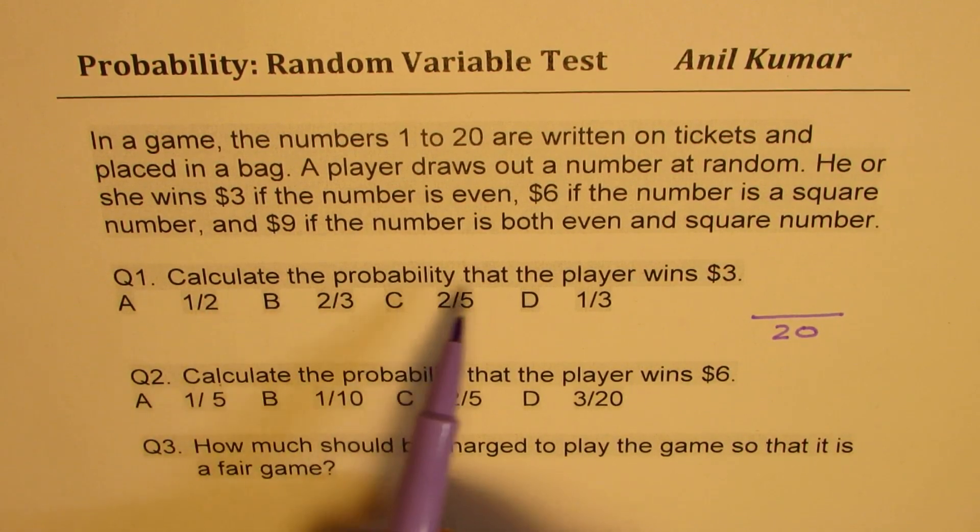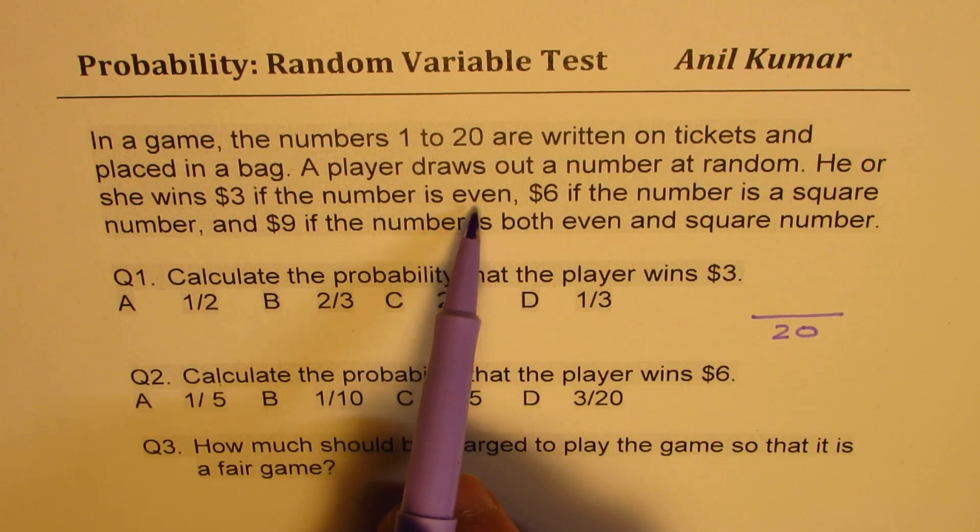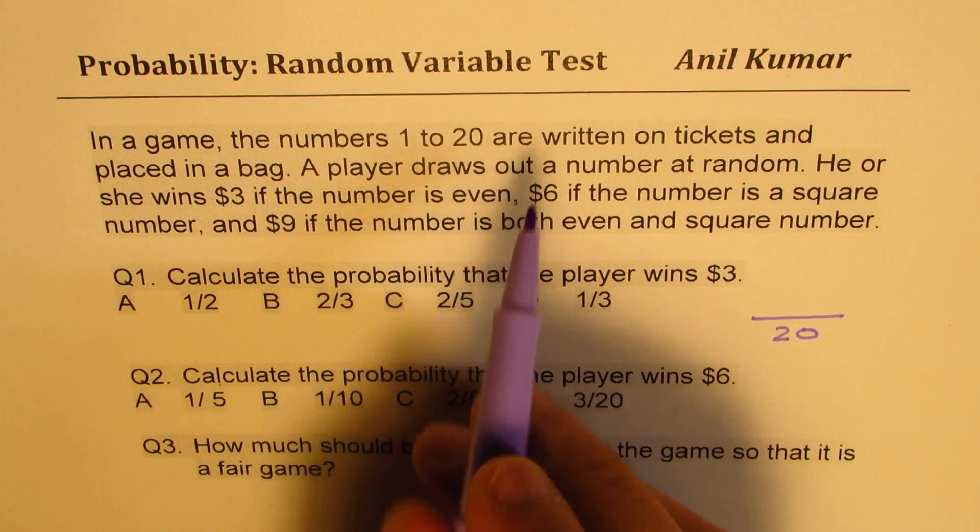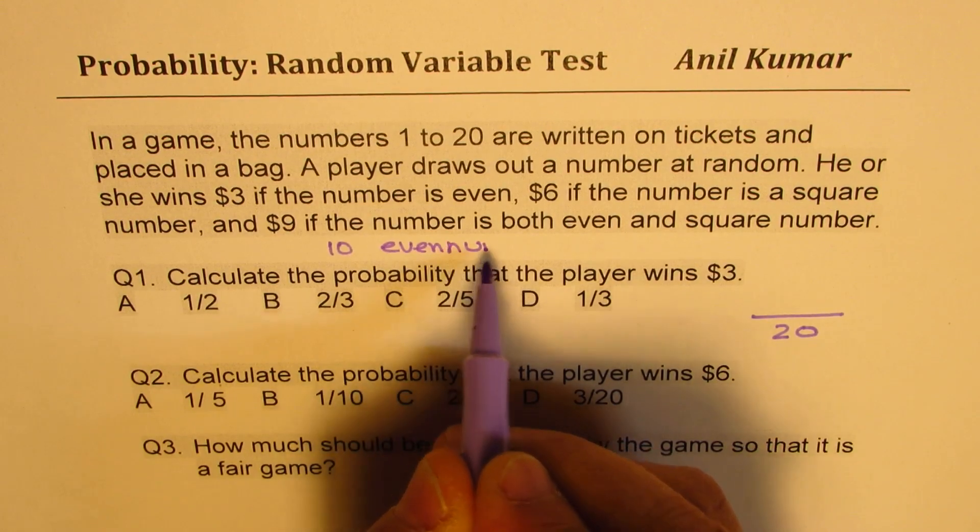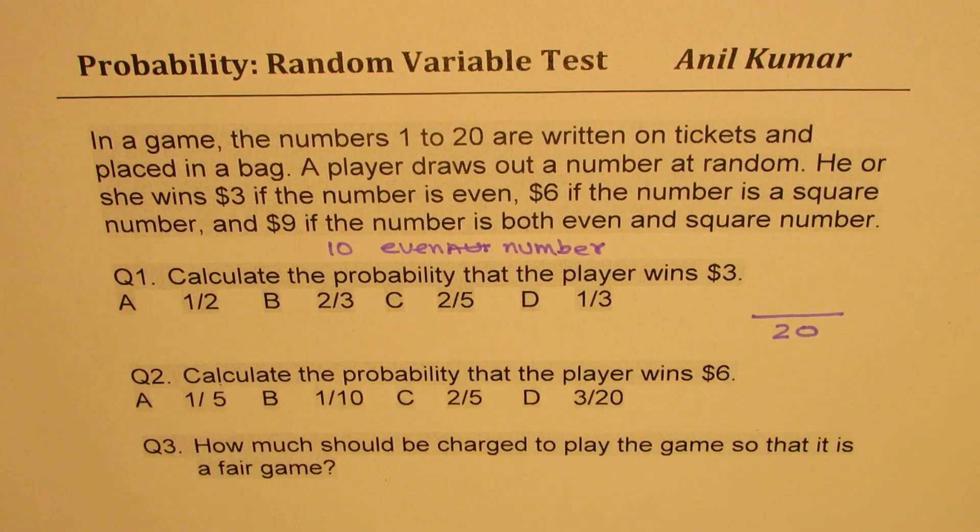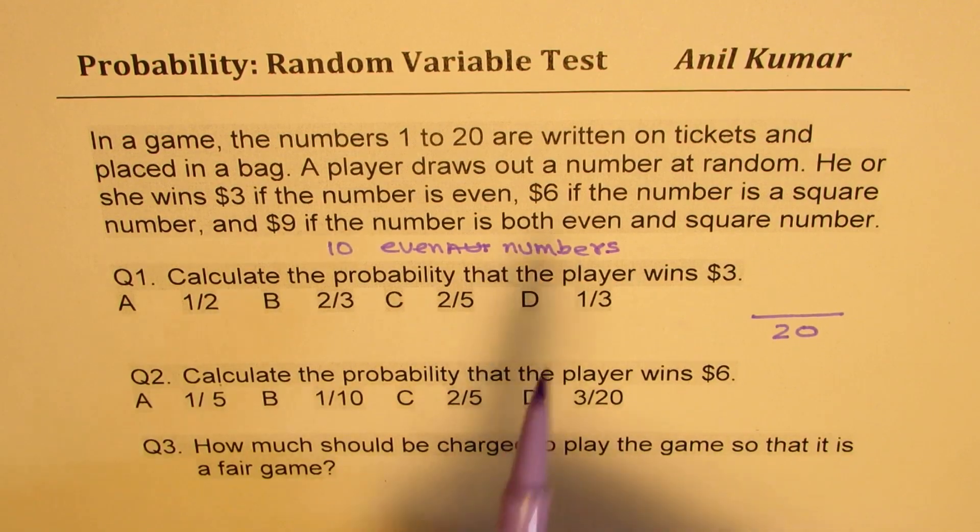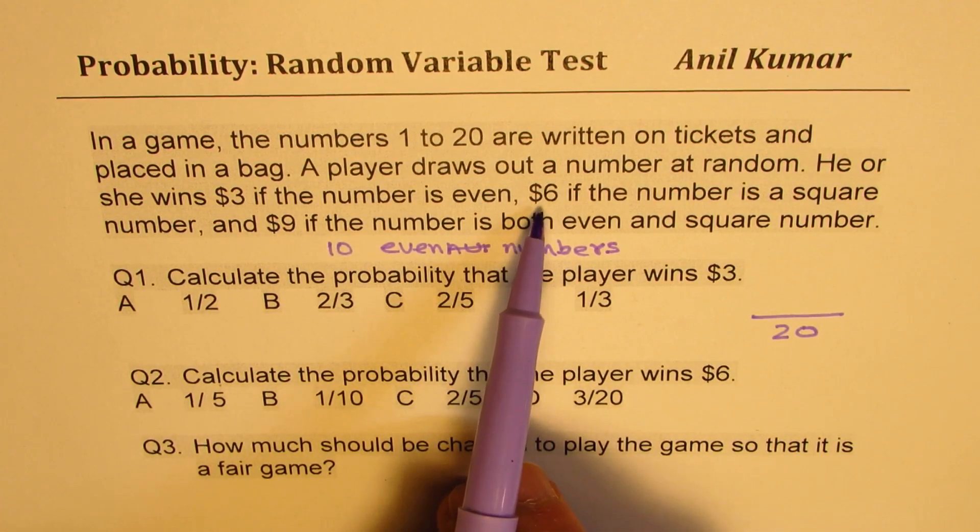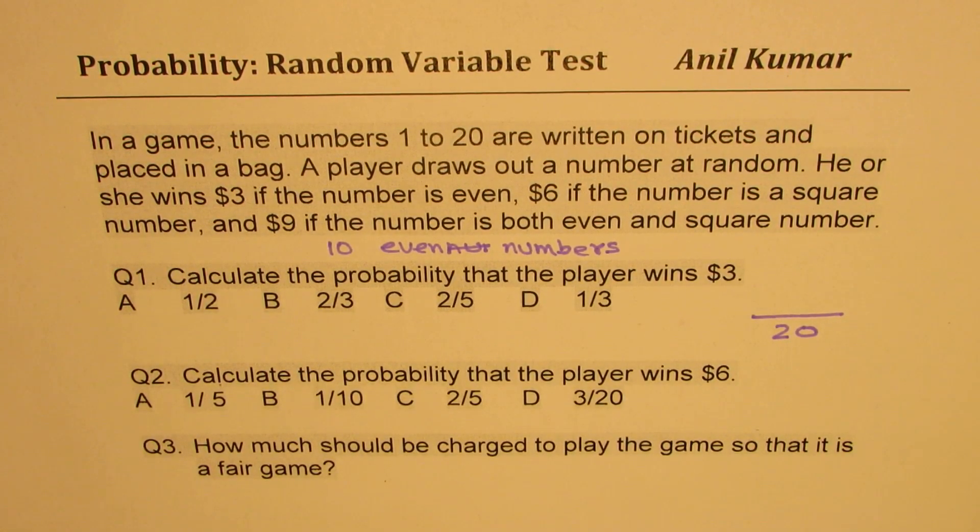Now, we need to find the probability that player wins $3. The player will win $3 on getting even numbers. So in 20, there are 10 even numbers. However, out of these 10 even numbers, some are squares. As you see here in the question which follows, $6 if the number is a square number. Now, what are the square numbers? Let's look into the square numbers also before writing down the answer.